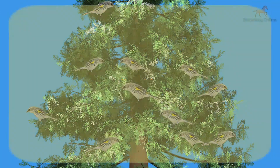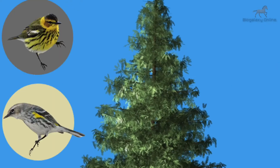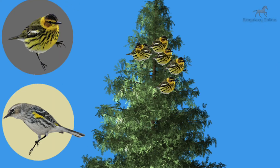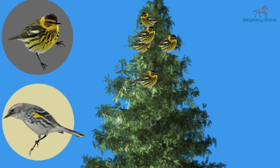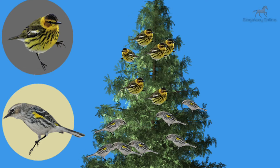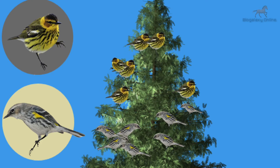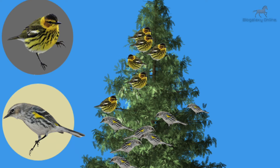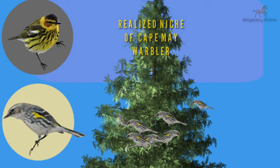However, in nature, warblers have to coexist and partition their resources. When both species of warblers are coexisting in a single tree, it is observed that the presence of another species restricts their activity. The Cape May warbler prefers to occupy the upper branches of the tree, and Myrtle warbler prefers to occupy the lower branches.